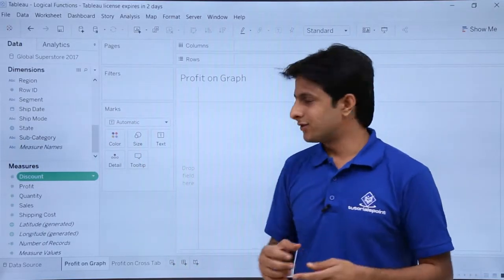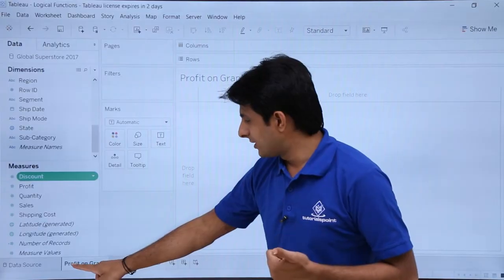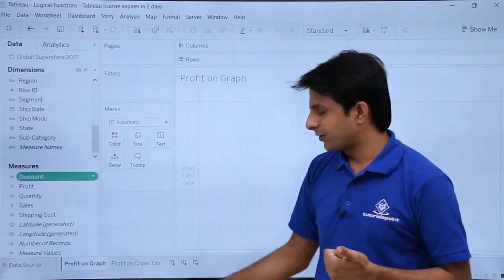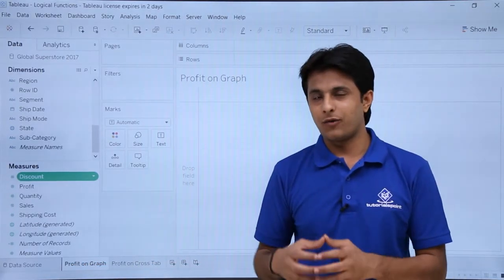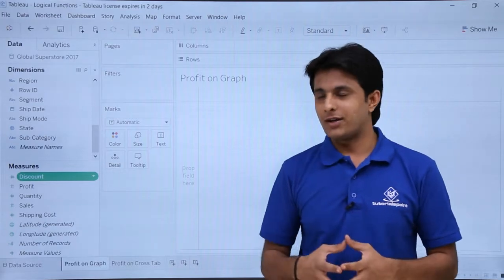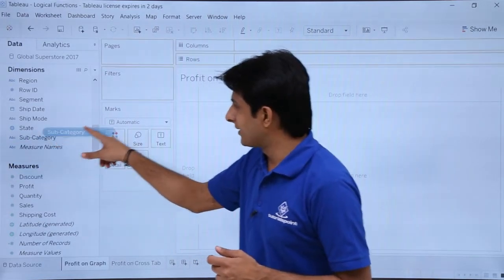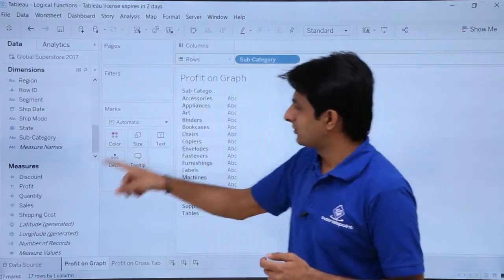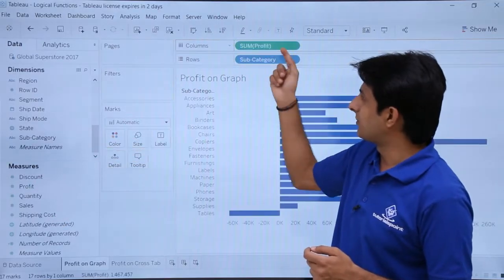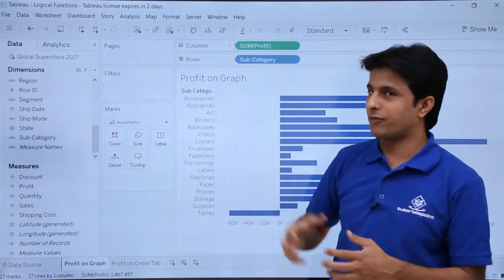So I'll show you two things in this video itself. One is the profit on the graph and profit on the crosstab. How do I highlight the profit into the crosstab into the bar chart itself? So first of all, I'll bring this subcategory into rows. Bring this profit into this columns because I want subcategory wise profit itself.